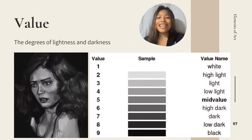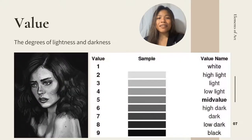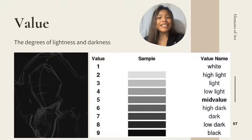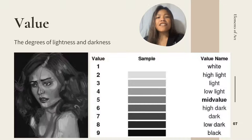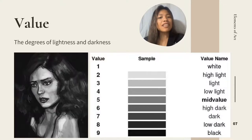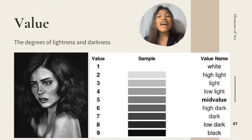Fourth is Value. Degrees of light or darkness. The difference between values is called value contrast.